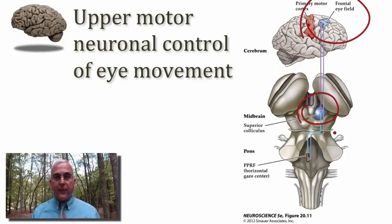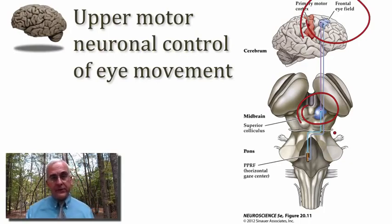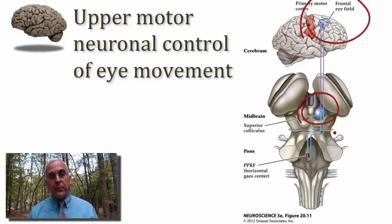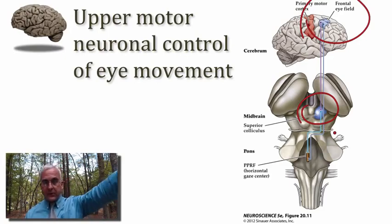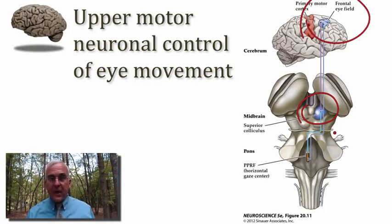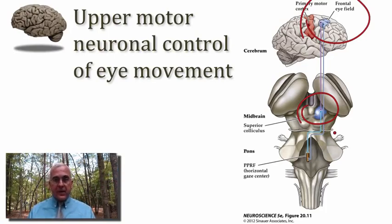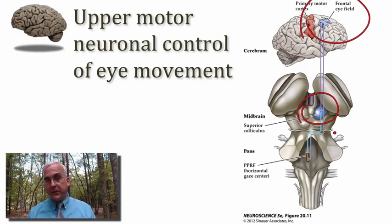This motor map for generating saccadic eye movements is informed by sensory maps present in both of these structures. That sensory map represents locations in the contralateral visual hemifield, such that if one were to record from neurons in the frontal eye field or the superior colliculus, one could define a receptive field somewhere in the contralateral visual world. If one were then to stimulate the same site, the animal or person would generate a saccadic eye movement to precisely the location of that receptive field.